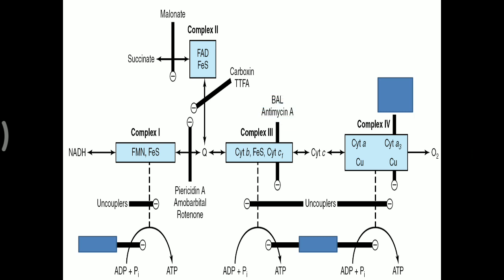Complex 3 is inhibited by British anti-lewisite (BAL) and antimycin A, blocking electron transfer from coenzyme Q to cytochrome C. Complex 4 is inhibited by agents you can remember with the mnemonic HCC: H for hydrogen sulfide, C for carbon monoxide, and C for cyanide, plus azide. These four — hydrogen sulfide, carbon monoxide, cyanide, and azide — inhibit the last complex of the electron transport chain, complex 4, which is cytochrome oxidase. These are the site-specific inhibitors.